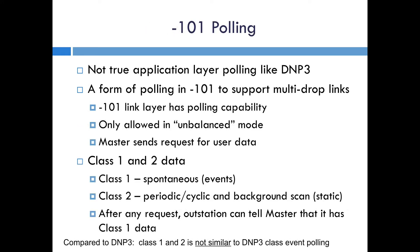Another function discussed in this specification is polling, though polling is a little bit of a misnomer. There's no real application layer polling like there is in DNP3. The polling they're referring to here is to support multi-drop links for IEC 60870-101. It is the link layer which is doing this polling — only for the unbalanced mode where the master is requesting user data at the link layer, basically telling the outstation to send anything it has. This allows the 101 unbalanced mode outstation to send data as it has it. It defines this as class 1 and class 2 data: spontaneous or event data is class 1, and class 2 data is the cyclic or background static data.